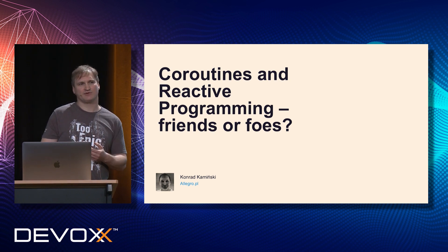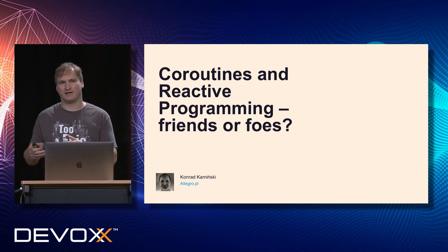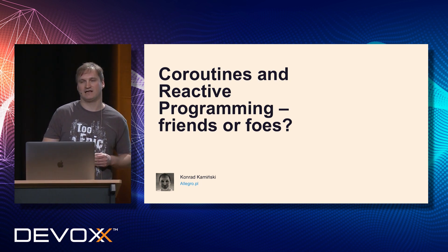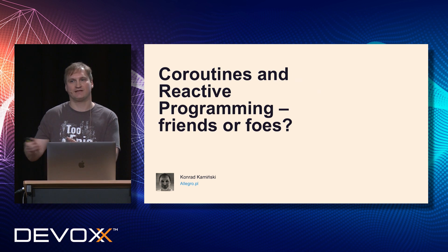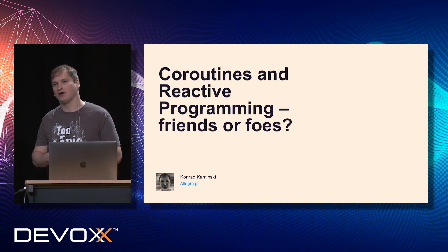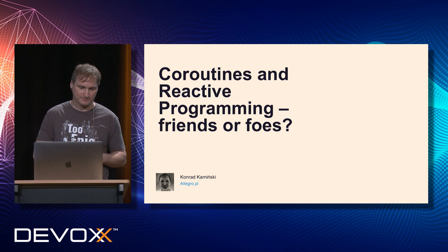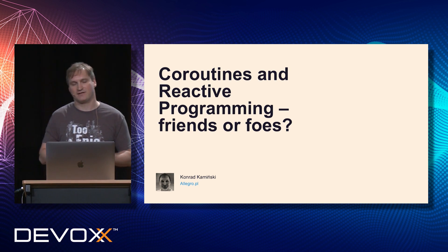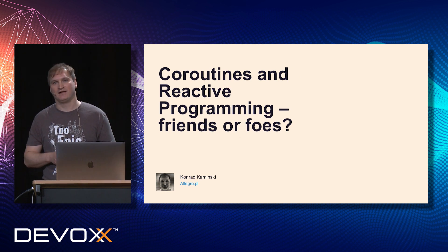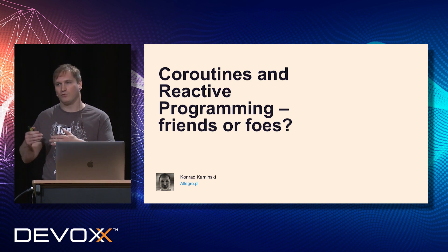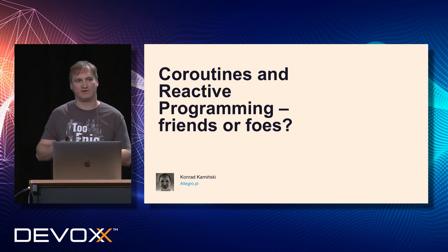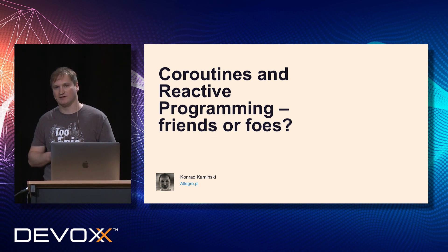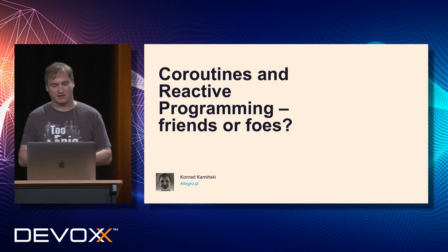We've been doing asynchronous programming with libraries for a couple of years now. Recently a new feature in Kotlin has been introduced, namely coroutines. The concept itself is old, but in Kotlin it's been around for about two years. You can use it to create asynchronous applications — they were actually designed for exactly that. It's worth knowing when to use coroutines versus reactive programming, or whether we can mix both. This presentation should help you see when to use one or the other.